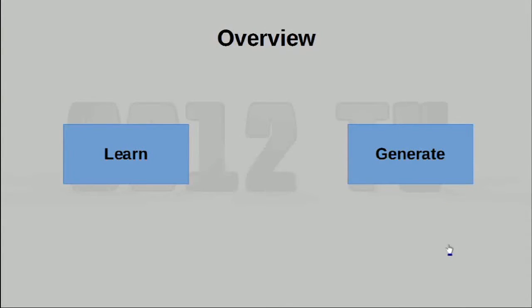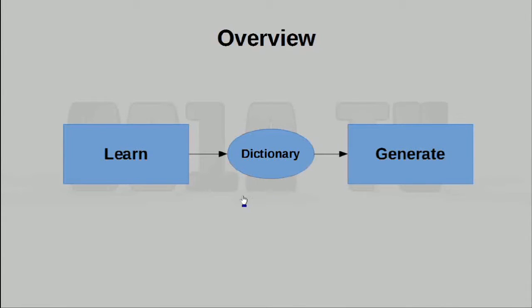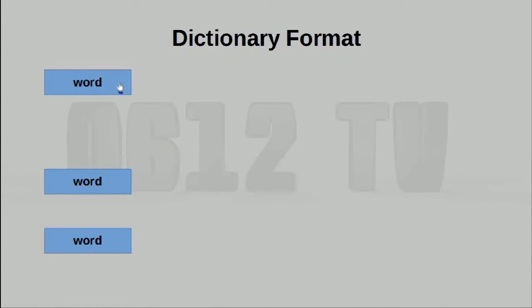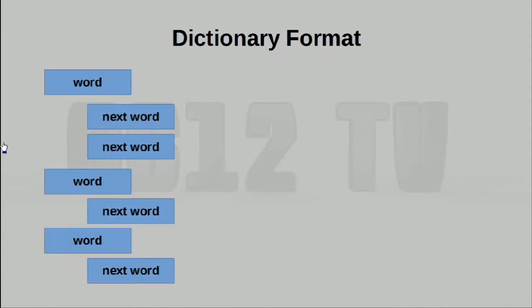Let's begin by having a thorough understanding of what we're going to be doing. For this project, we're going to be writing two programs: one to actually learn from your input and generate your Markov chain, and another to actually generate text based on the Markov chain. These two programs don't run at the same time, which is why in order for them to communicate, a dictionary file is going to have to be created. We're going to be writing these two modules in Python, but the dictionary file that is going to be shared is going to be a JSON file.